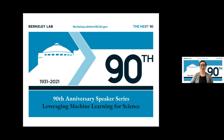Since our founding in 1931 by a young physics professor named Ernest Orlando Lawrence, Berkeley Lab has been dedicated to advancing the scope of human knowledge and seeking science solutions to some of the greatest problems facing humankind. We're celebrating the Lab's 90th birthday this year, and to mark the occasion, we've developed a range of content, including podcasts, virtual tours, historical highlights, and this speaker series, all intended to shine a spotlight on the Lab's unique approach to team-based and pioneering discovery science.